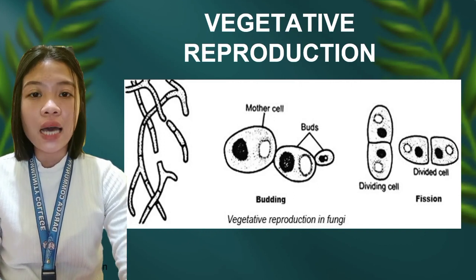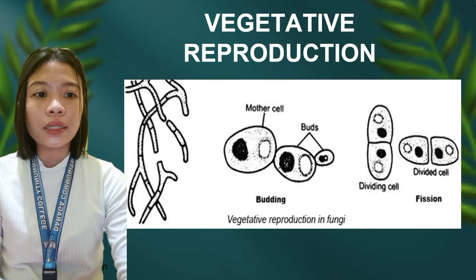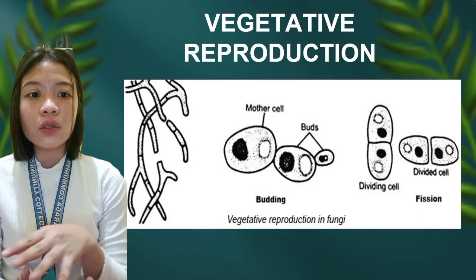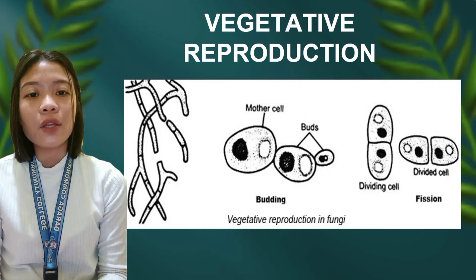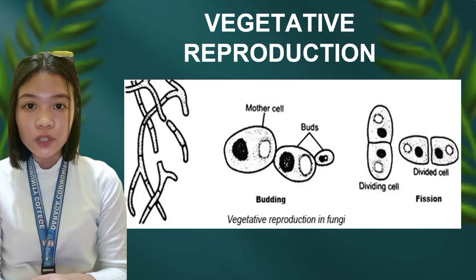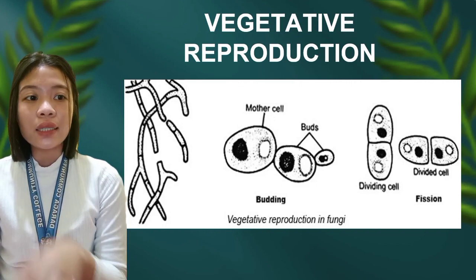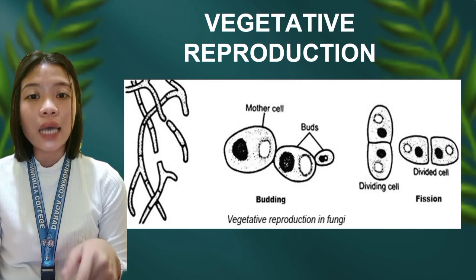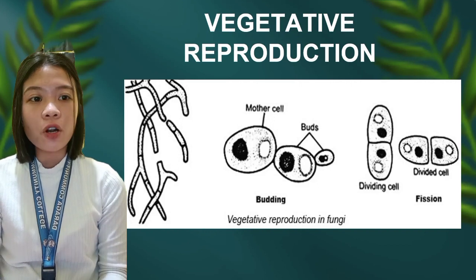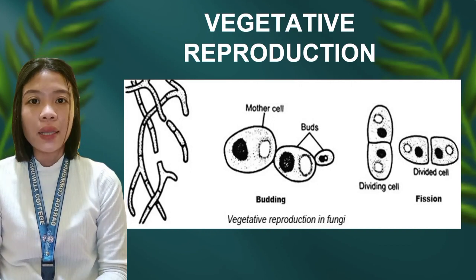Next is fission. Fission is when the parent cell elongates and cleaves itself into two identical daughter cells. The cell division begins with the nucleus of the cell extending into the cytoplasm and then into the cell membrane, forming two daughter cells that can thrive independently.